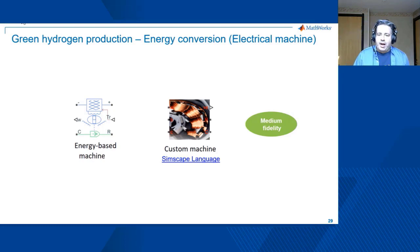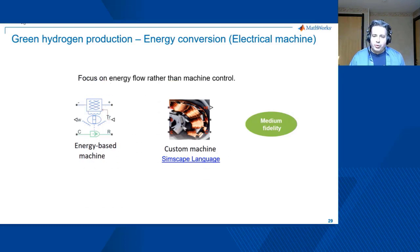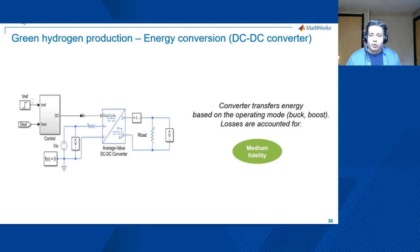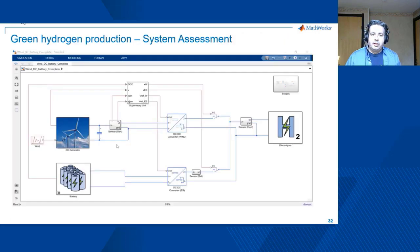Going back to energy conversion at the system level, machine models will focus more on energy flow rather than machine control. DC-DC converters are going to be modular and averaged — they can be controlled with a duty cycle, current, or voltage reference, they account for losses, and they are fast to simulate.